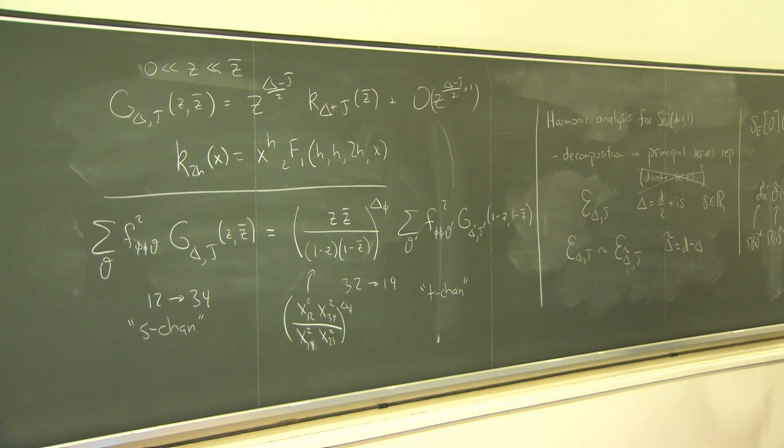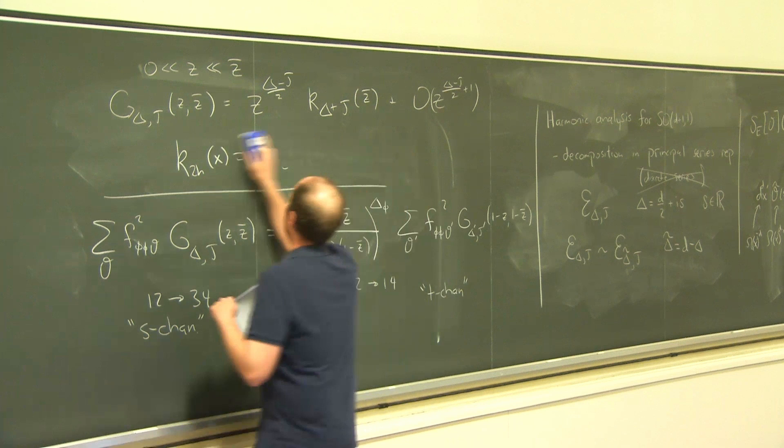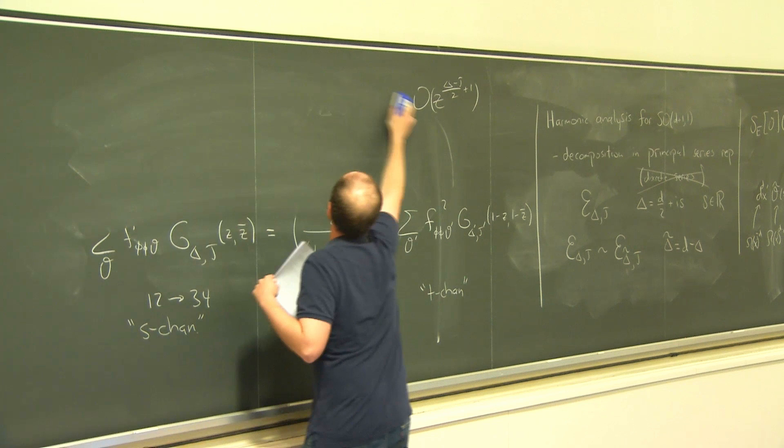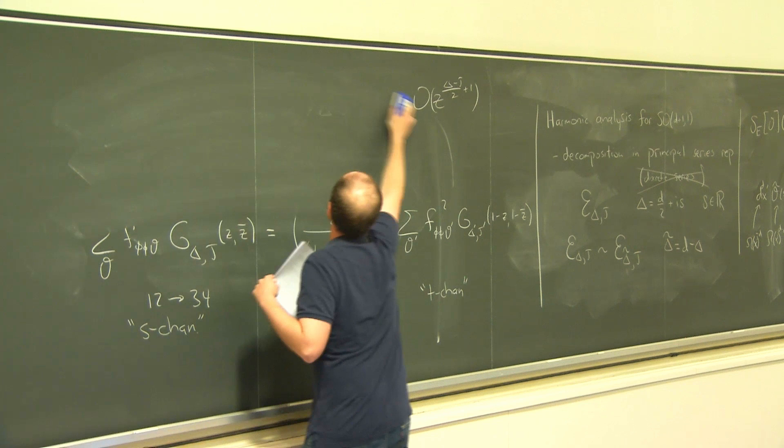The statement of harmonic analysis is that these particular representations are special because they give us some kind of complete basis for decomposing things that transform under the conformal group. Let's look at something that transforms under the conformal group and apply harmonic analysis to it. We're going to consider a correlation function with two operators, phi(x1) and phi(x2), and a bunch of other operators.